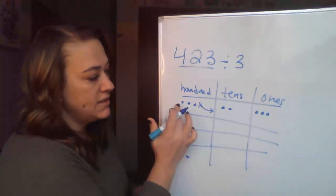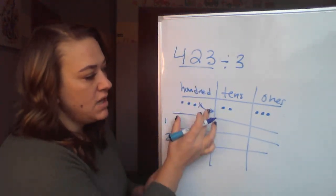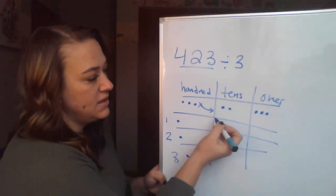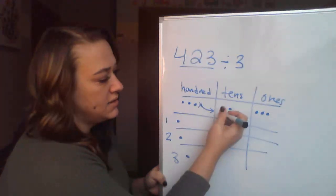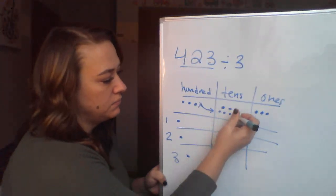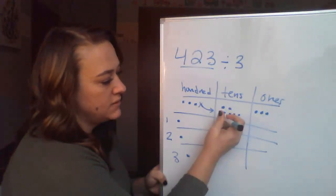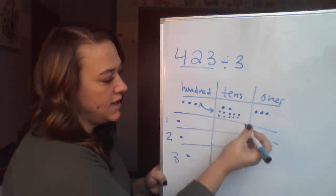When I decompose, my 100 is equal to 10 tens. So I'm going to add my 10 tens to my two tens. So I've got 2, and I'm going to add 10 more.